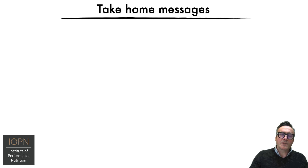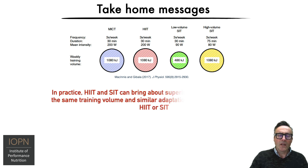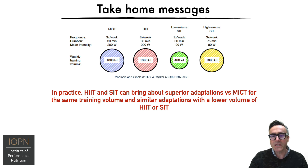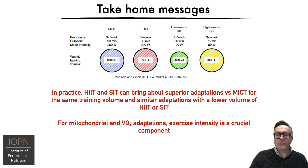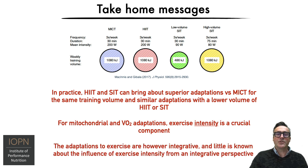So what are the key Science to Practice take-home messages relating to these various forms of interval training? Firstly, in practice, HIIT and sprint interval training can bring about superior adaptations versus MICT for the same training volume, and similar adaptations with a lower volume of HIIT or SIT training. Also, for mitochondrial and VO2 adaptations, exercise intensity is a crucial component to consider. Finally, the adaptations to exercise are integrative, and little is known about the influence of exercise intensity from an integrative perspective.